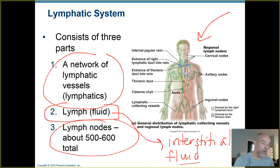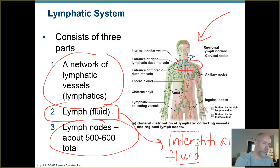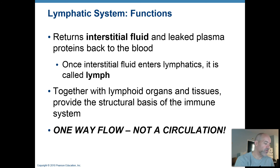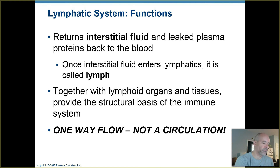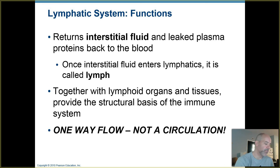Where is this lymph going? It's going back to the blood — specifically, it's going to re-enter the blood in the subclavian vein. If you didn't have your lymphatic system, your interstitial fluid would increase in volume and you'd have tissue swelling all throughout the body. The major functions include returning interstitial fluid and leaked plasma proteins back to the blood. On the arteriolar end of a capillary, more fluid gets pushed into your tissues than returns on the venule end, so you need a way to get rid of that excess fluid. I think of lymphatics as drainage ditches for your tissues.